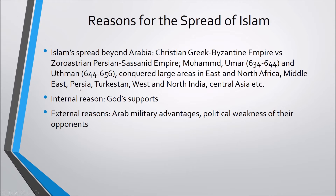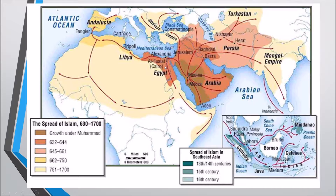After the prophet's death, Islam spread far beyond Arabia. In the 6th century, two powerful empires divided the Middle East: the Christian Greek Byzantine Empire centered at Constantinople, and the Zoroastrian Persian Sassanid Empire concentrated at Ctesiphon, in today's Iraq. Zoroastrian was the original religion of the Persian Empire.